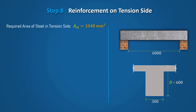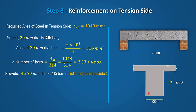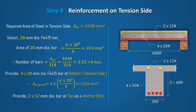To fix the number of bars, select bar diameter as 20mm with a cross-sectional area of 314 mm². Dividing the required area of steel by the cross-sectional area of each bar, provide 4 numbers of 20mm diameter bars at the bottom (tension side), giving a total area of steel provided of 1256 mm². Also provide 2 numbers of 12mm diameter bars at the top as anchor bars.